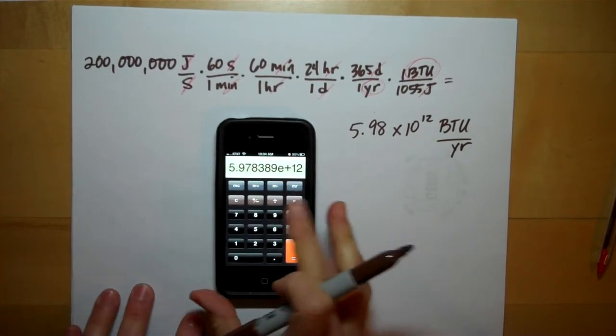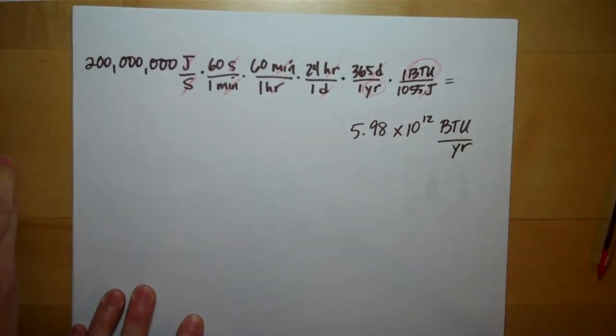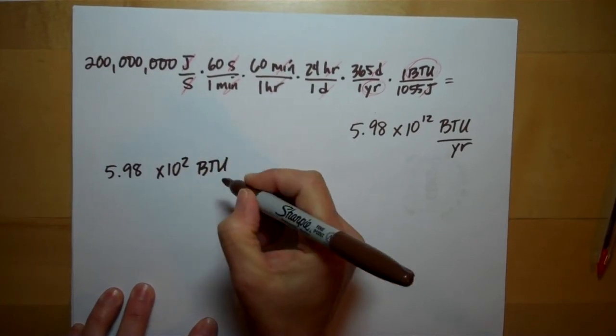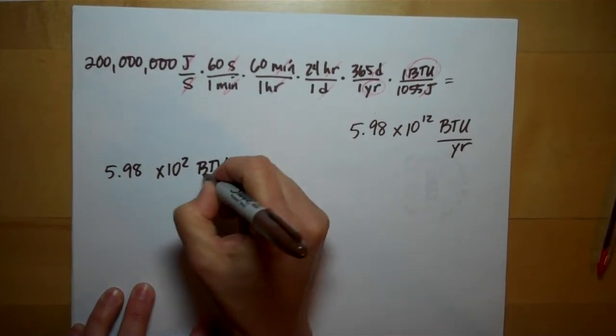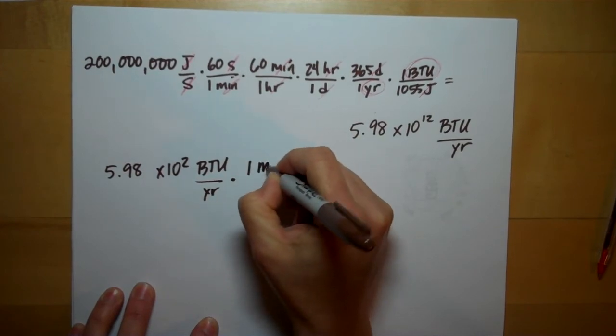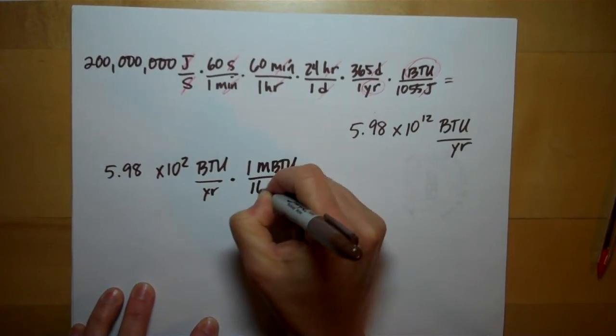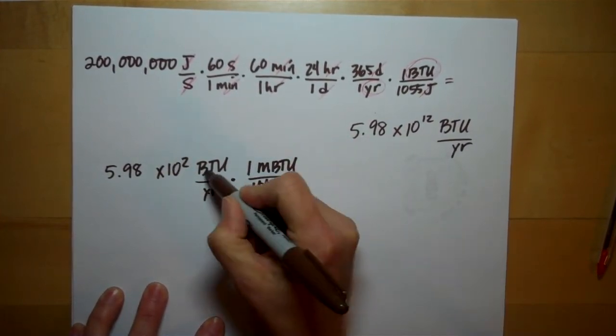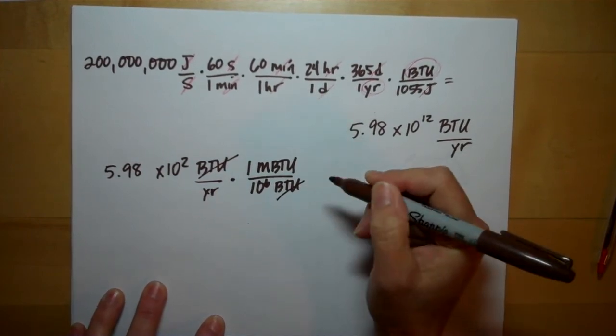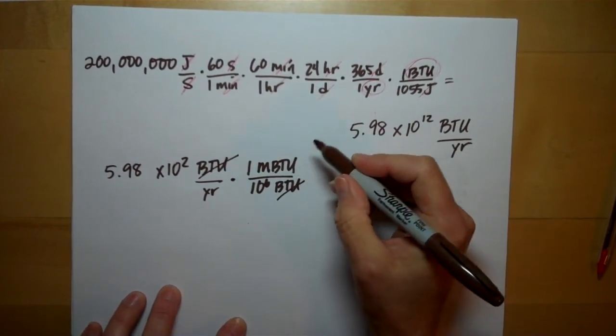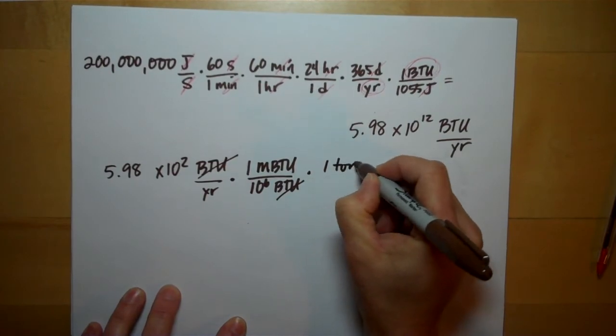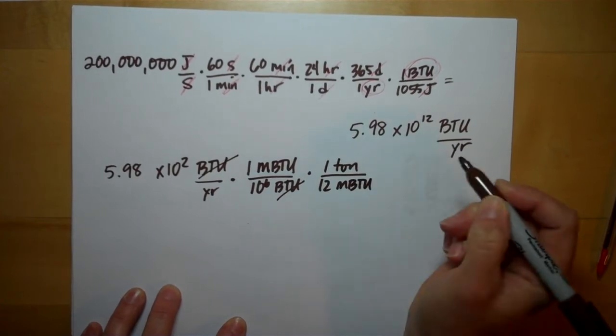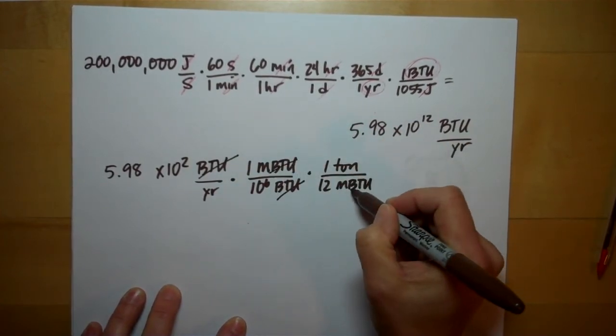Now, we have to do, the answer they wanted in tons, we have to do a little bit more conversion. 5.98 times 10 to the 12th BTUs per year. We know there's one mega BTU in 10 to the 6th. Mega means million BTUs. So our BTUs will cancel. And we're being told that wood, for every ton of wood you harvest, you can produce 12 mega BTUs of energy. Mega BTUs cancel.